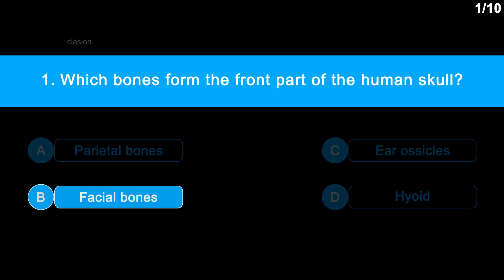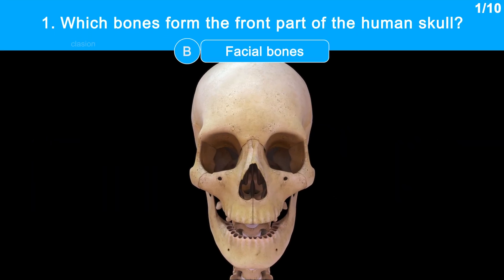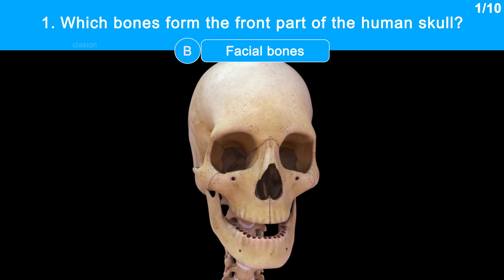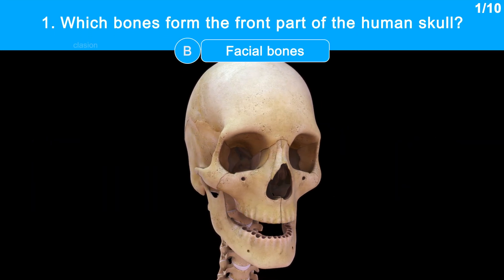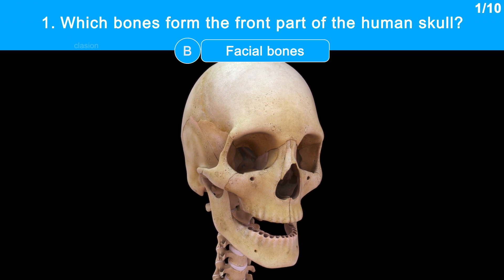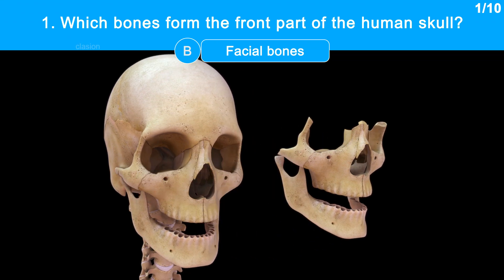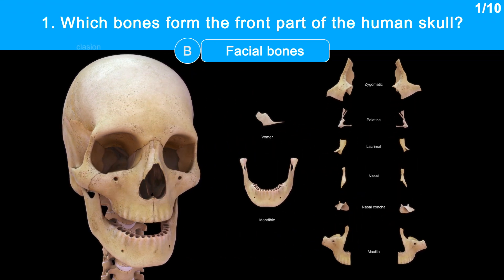The correct answer is Option B: Facial bones. Let us check our front part of the skull — it is made of facial bones. These are 14 in number.